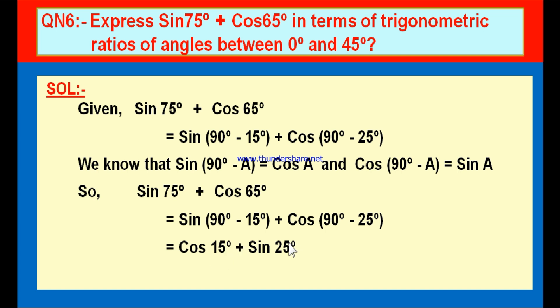In this answer, the angles 15° and 25° both lie between 0° and 45°. We have successfully changed the trigonometrical ratios so that the angles lie between 0° and 45°. By this, we conclude exercise 11.3. Video links for the introduction to trigonometry and all problems from exercises 11.1, 11.2, and 11.3 are provided in the description. Please click them and revise at your convenience. Thank you, one and all.